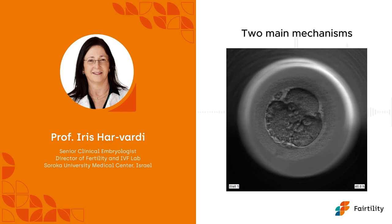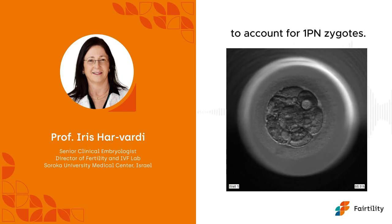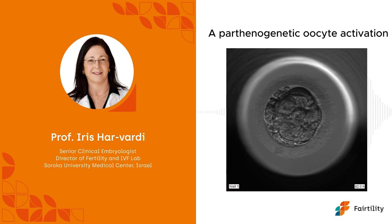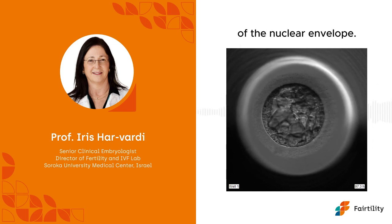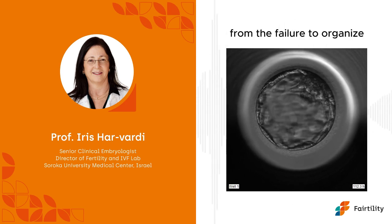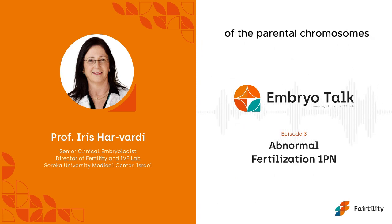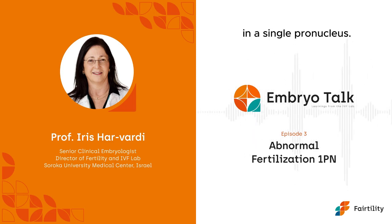Two main mechanisms have been proposed to account for 1PN zygotes: a parthenogenetic oocyte activation, or an abnormal formation of the nuclear envelope. The latter could result from the failure to organize a nuclear envelope around one of the parental chromosomes, or from the arrangement of the two genetic materials in a single pronucleus.